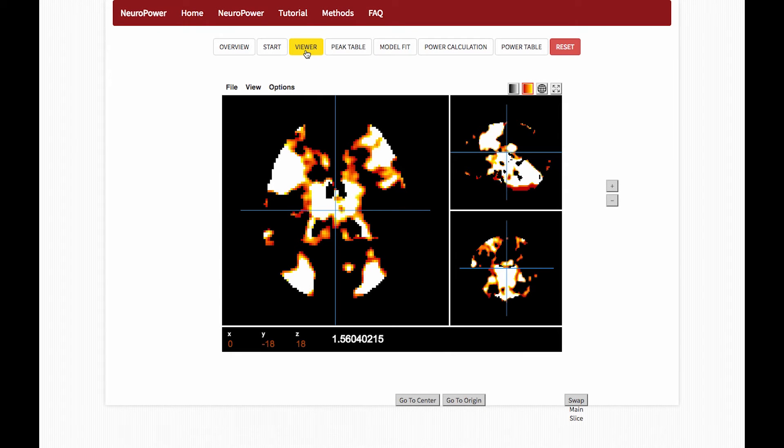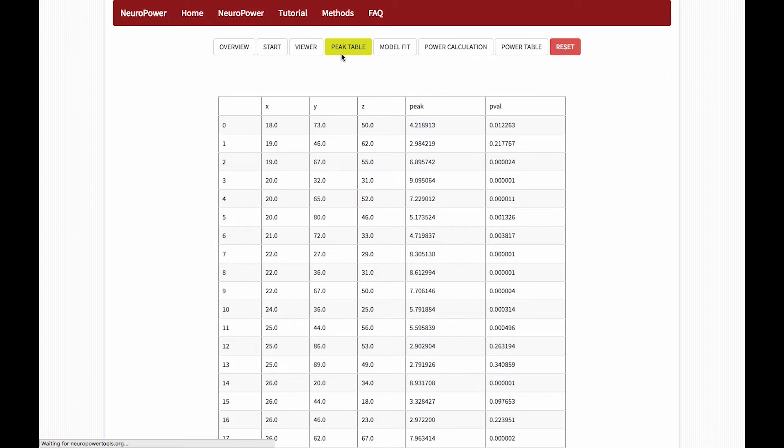Next, we're going to look at the viewer. This will show you, if you pulled your data from NeuroVault, the group level Z map or T map. The peak table is simply the coordinates of each peak Z value, or T value, as you may have it.